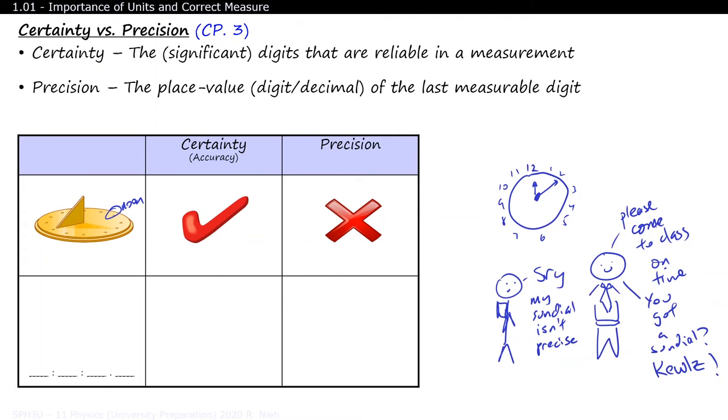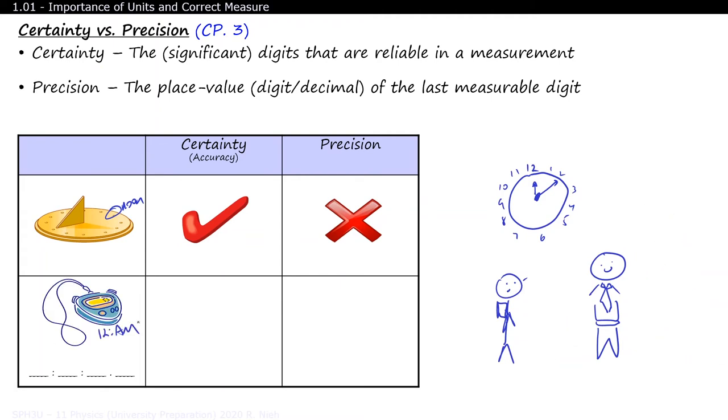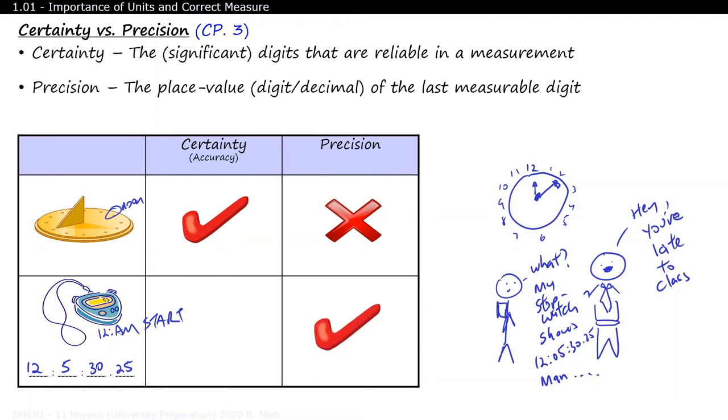On the other hand, if you acquire a cheap stopwatch and start the clock at midnight, and use it as a clock the next day, you might think that you've made it to class early if it shows 12 hours, 5 minutes, and 30.25 seconds. Meanwhile the classroom clock already shows 12.11pm, so you're already one minute late for class. Even though the stopwatch is very precise, showing time to the nearest hundredth of a second, while in this example it's not very certain. In scientific experiments, it is our goal to aim for measurements that are both precise and certain.